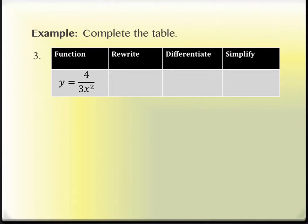The x squared has a similar feeling to the x to the n rule that we have, but the x squared is in the denominator, not in the numerator where it should be for the power rule. So as we think about rewriting this, we need to move that x squared to the numerator. Please don't move the three — three and x squared are multiplied, but you can't move x squared and take the three along with it. That's not correct.